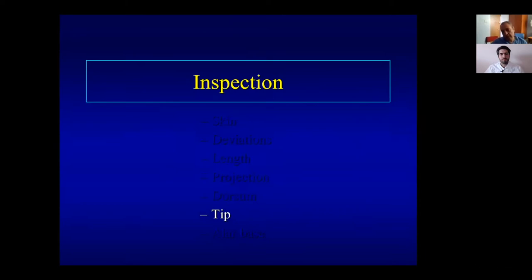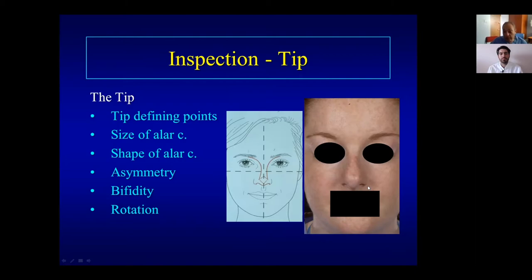The tip is quite complex. It's shaped by the lower lateral cartilages, which you can sometimes see under the skin. The tip-defining point is a light reflex. There are four defining points in total: the main tip-defining point, the supra-tip above, and the infra-tip below. Look for any irregularity, asymmetry, size of the cartilage, shape — boxy or square — and the space between the lower lateral cartilages, as well as rotation of the tip up or down on the profile view.